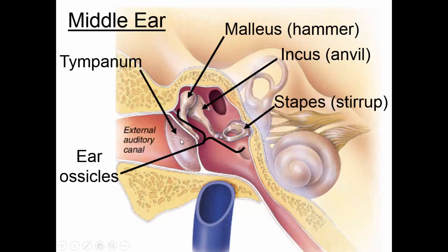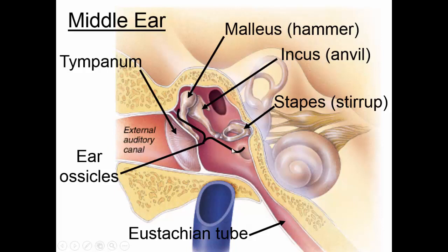When sound hits the eardrum, it's going to vibrate the eardrum. This will cause the malleus to hit the incus to hit the stapes, and the stapes will push on this window into the inner ear. Also part of the middle ear is the eustachian tube. Because this is a closed space, the eustachian tube allows for equalization of pressure on both sides of the eardrum.